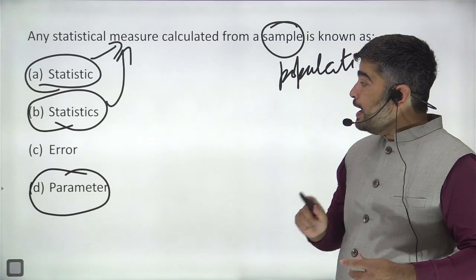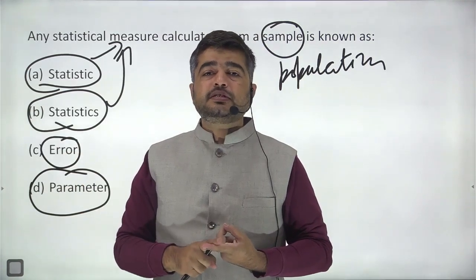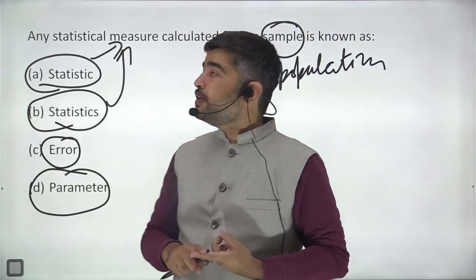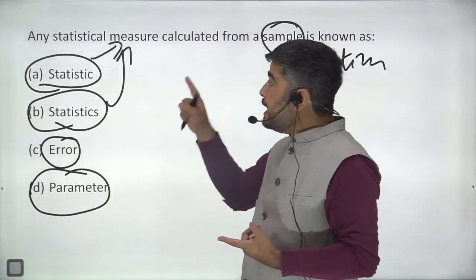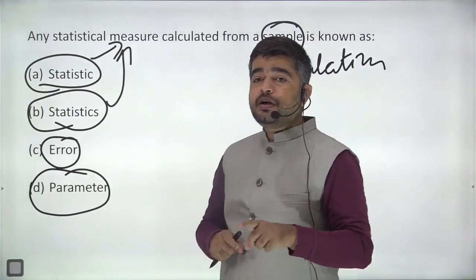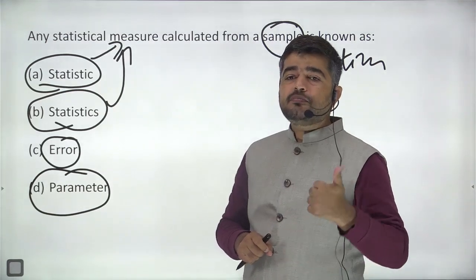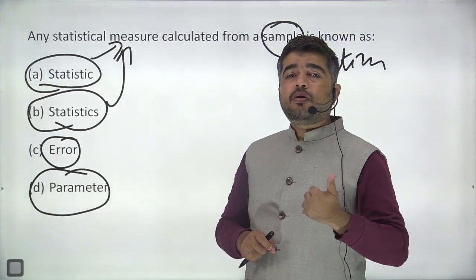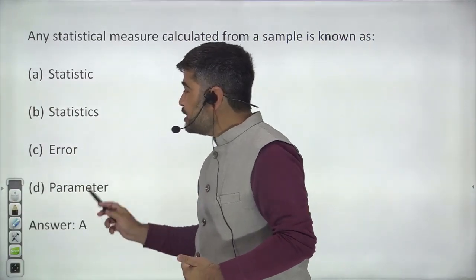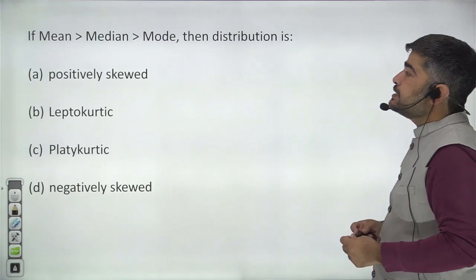Statistics is the subject which deals with data. A statistic is any statistical measure calculated from a sample — not from the population. From the population it is called a parameter. Usually we calculate from sample only because calculating from the whole population is a very tedious task. So answer will be A.